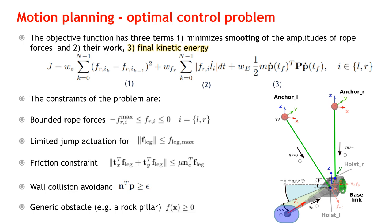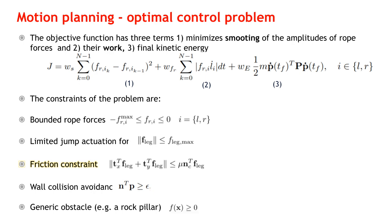There are several physical constraints in the system: bounds on the rope forces, on the leg impulse, friction constraint that relates the tangential to the normal component. The last two constraints are included to ensure that the motion is in front of the wall and avoid obstacles.